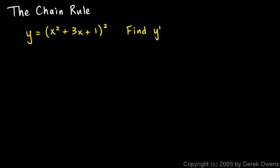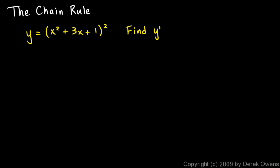Now you might think: can't we just use the power rule? Take the exponent, pop it out front, and reduce the exponent by 1, so we would get 2 times all of this to the power of 1. That won't quite work, because this thing inside here is a function and not a simple variable.